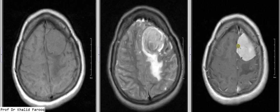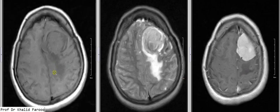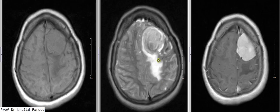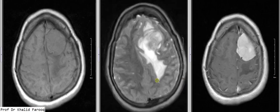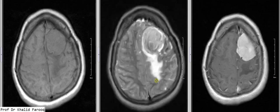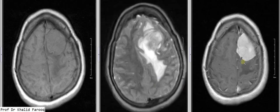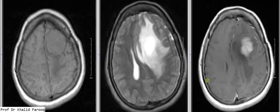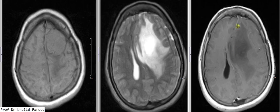Here we can see cortical vessels which are compressed by the mass lesion. We can also see low signal intensity areas in the brain parenchyma which show increased signals on T2-weighted sequence, favoring vasogenic edema. This is because of obstruction of the draining cortical vein by the mass lesion.